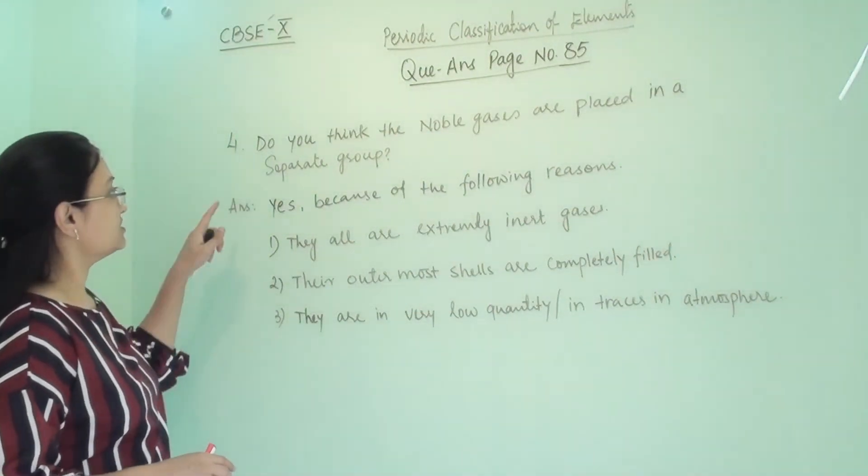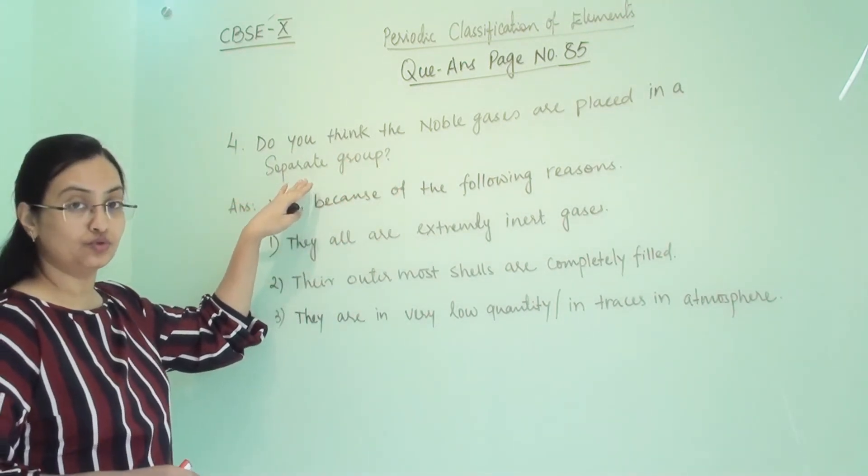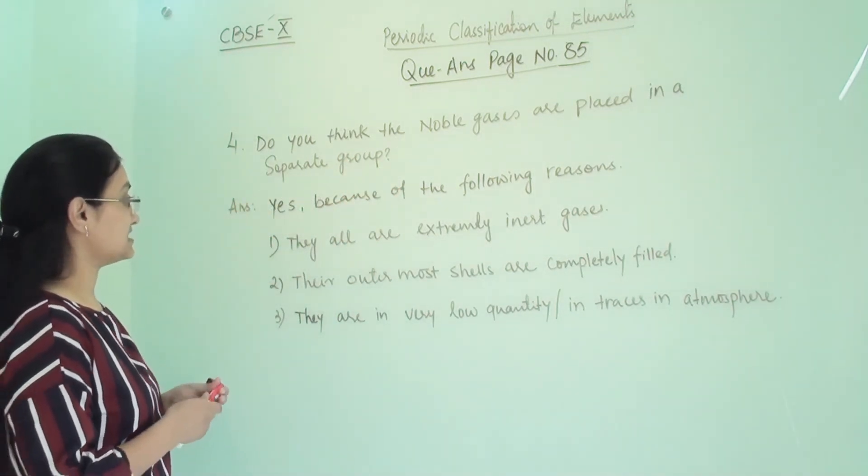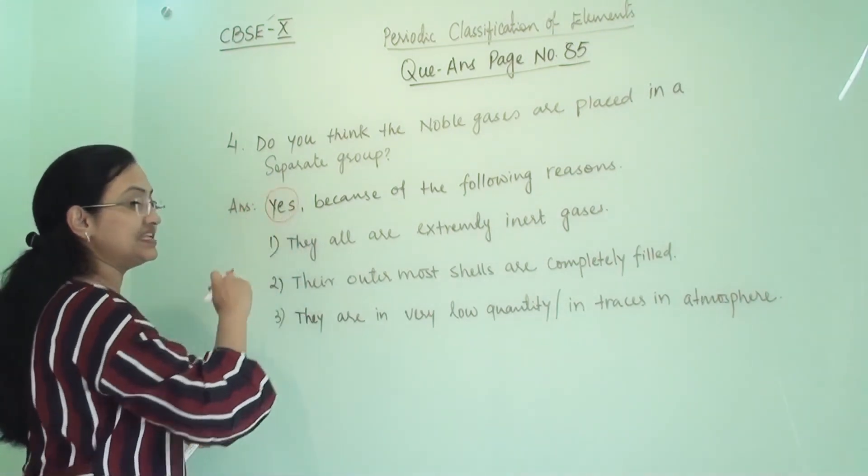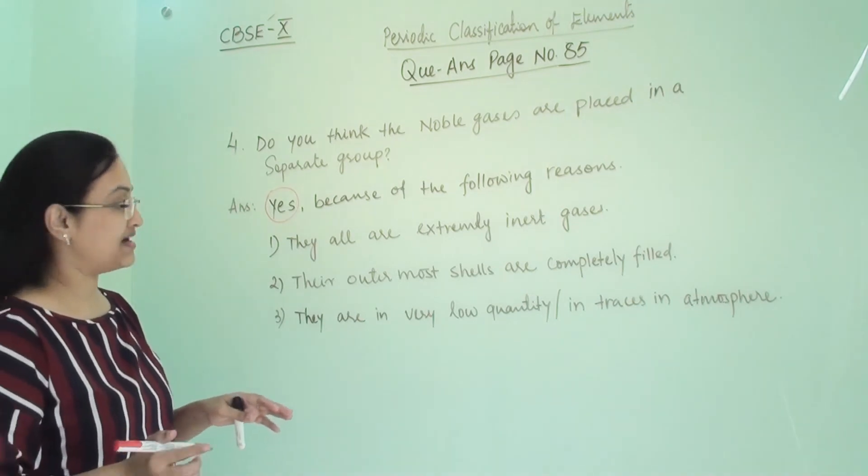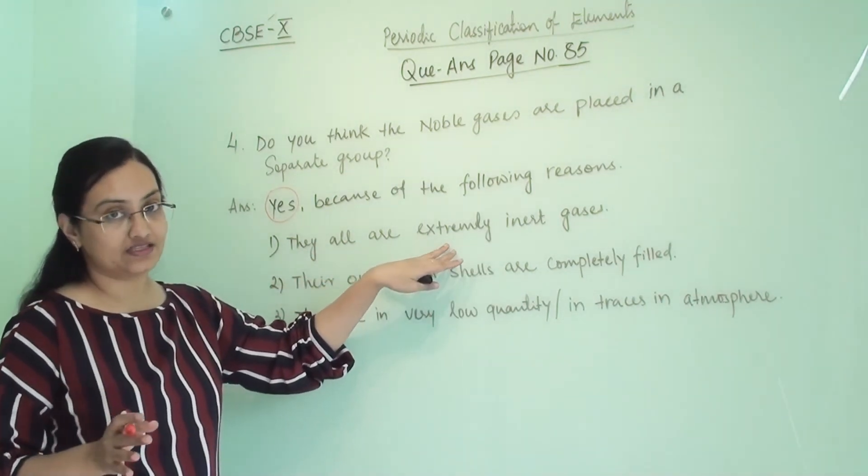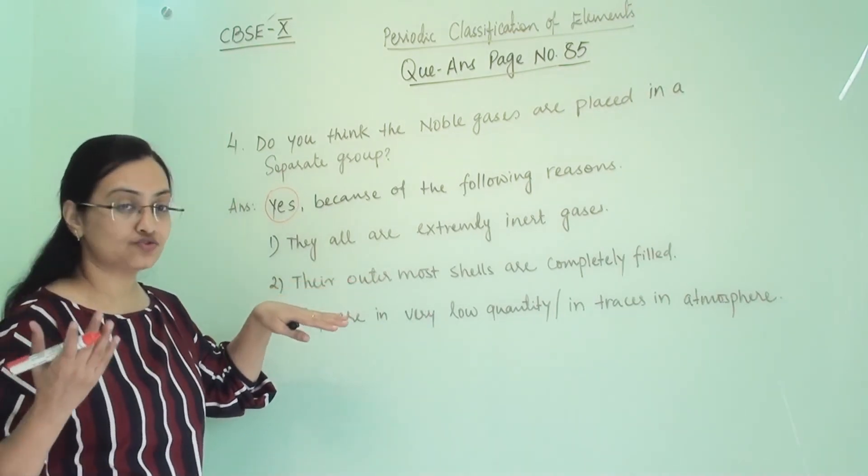The fourth question is: Do you think the noble gases are placed in a separate group? So the answer is yes. We need to place them separately because they are different from other elements. How? They all are extremely inert gases. They will not react so easily. Why?